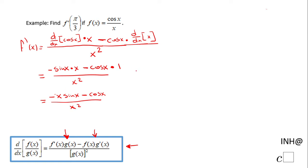Now we can move to the second part which is to evaluate this f prime of x at π over 3. And that will be negative π over 3 times sine of π over 3 minus cosine of π over 3 over π over 3 squared.